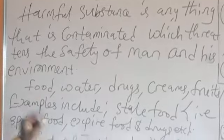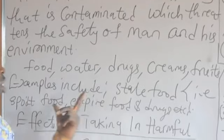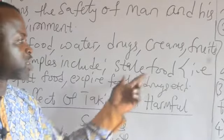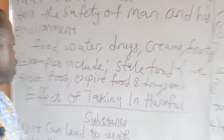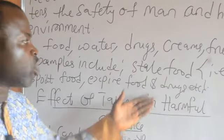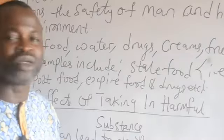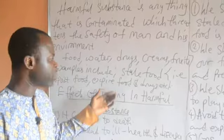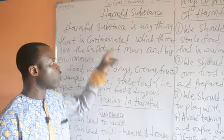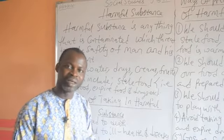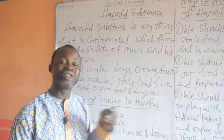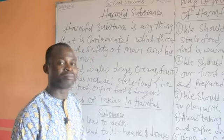A good example listed here: stale food. When we say stale food, it could be a form of spoilt food, expired food, or expired drugs. Expired food and drugs that are contaminated and already expired are dangerous to man.